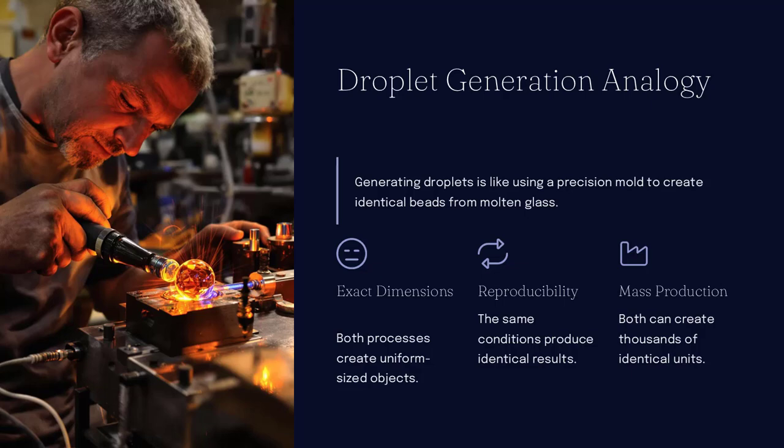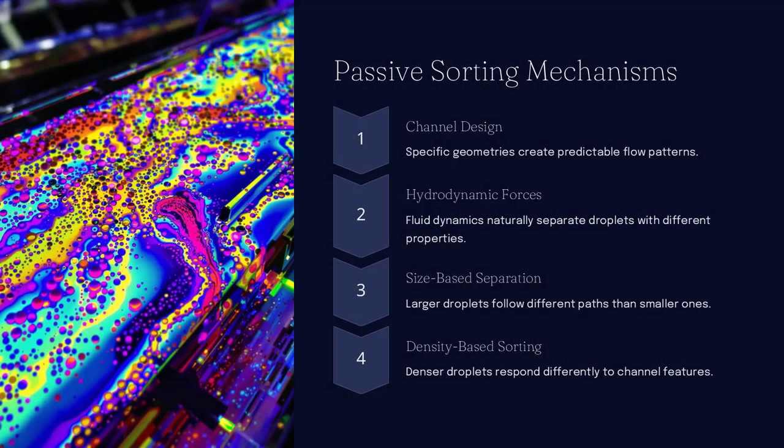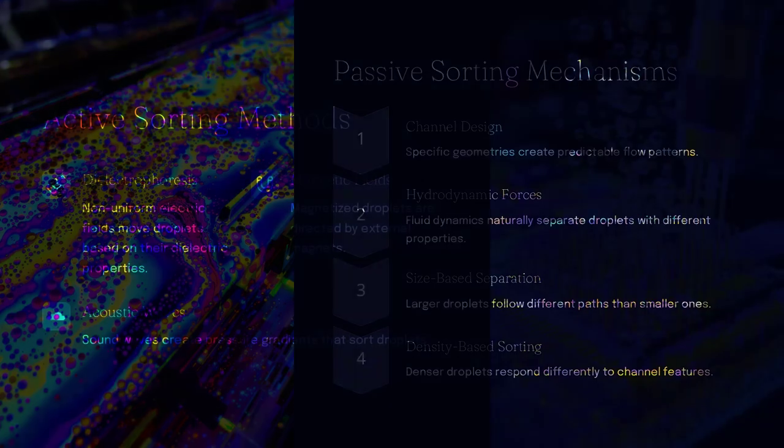Droplets, usually suspended in an immiscible carrier fluid like oil, move through these channels and can be influenced by changes in geometry, flow rate, or the application of external fields.